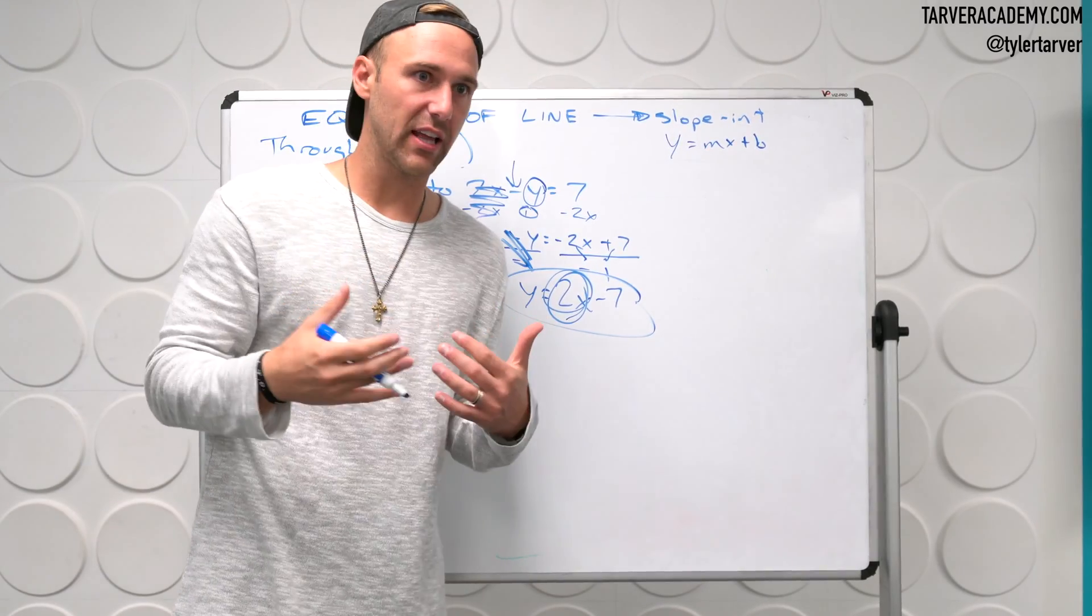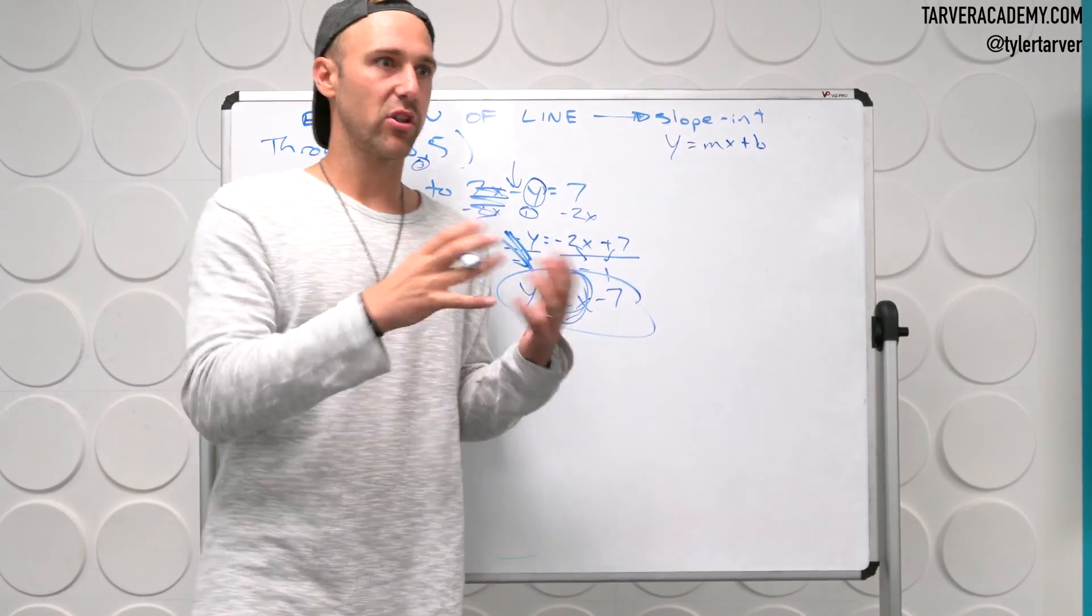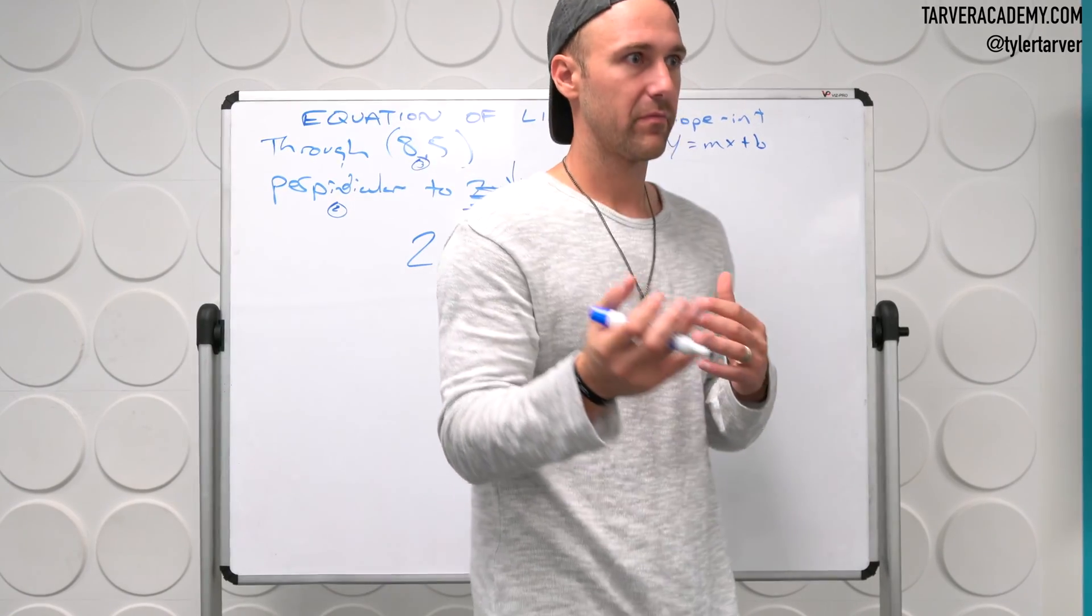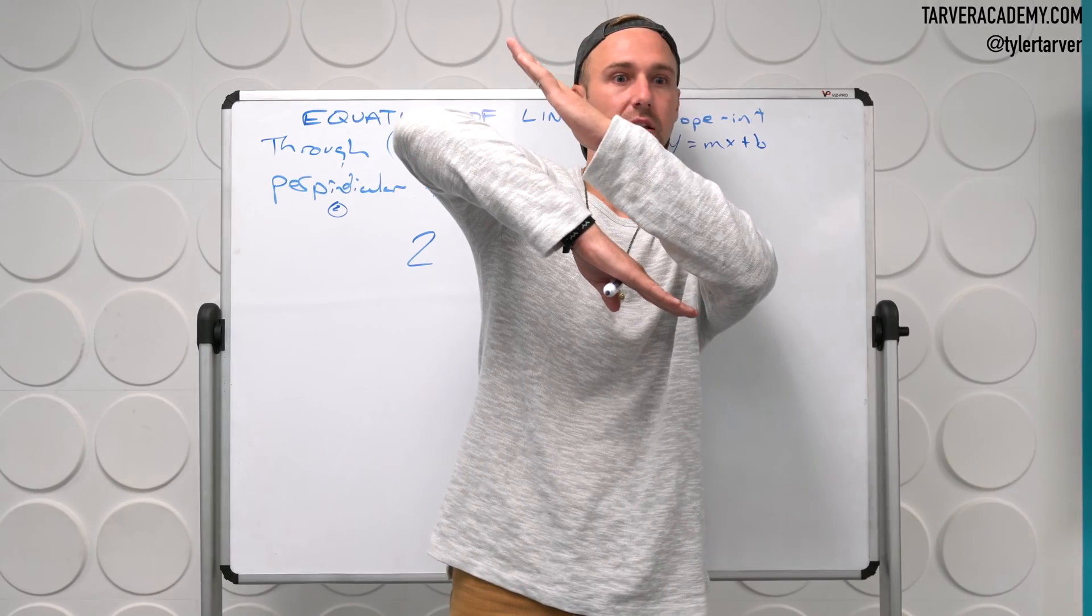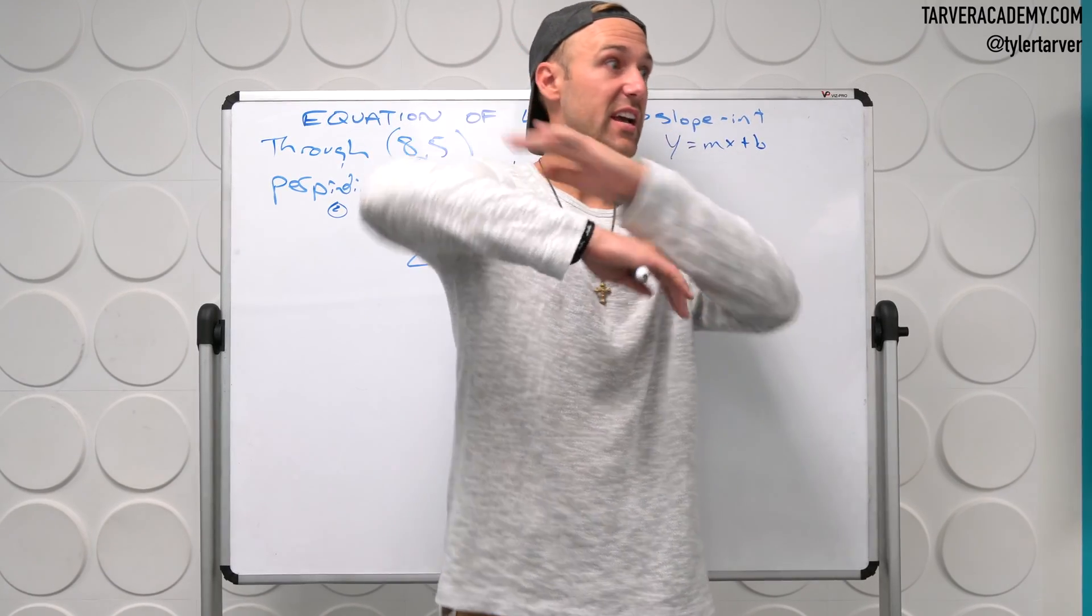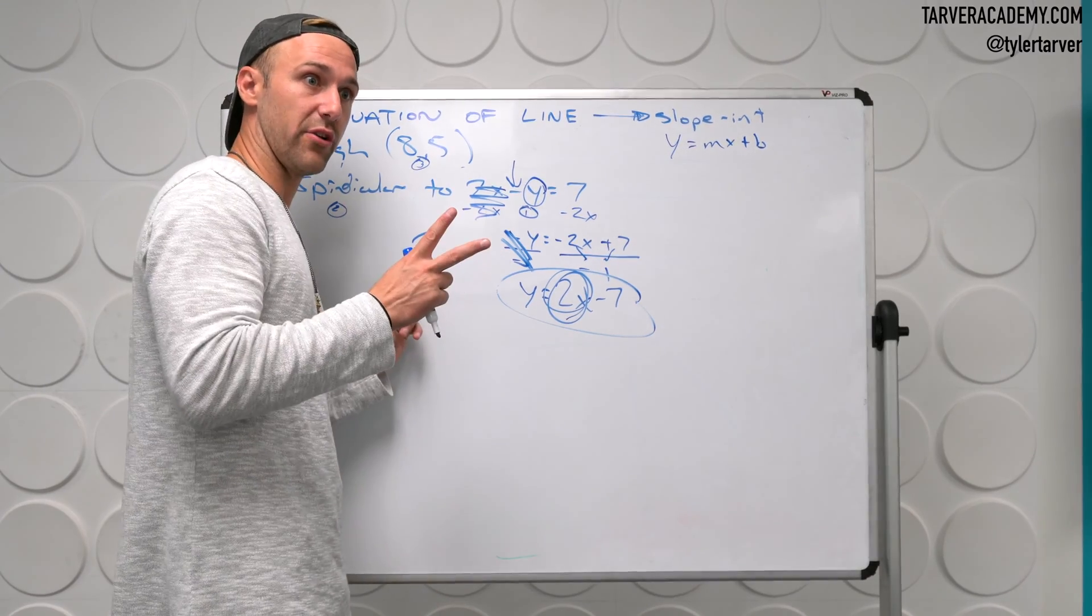If 2 lines are parallel, what does that mean their slopes are in relation to each other? If like one of them's slope is this and they're parallel is this, what does that mean? They're the exact same. It's like, so if it's parallel to this, that means it would be 2, correct?